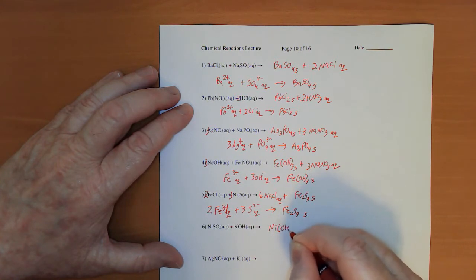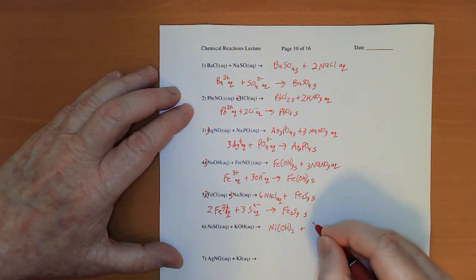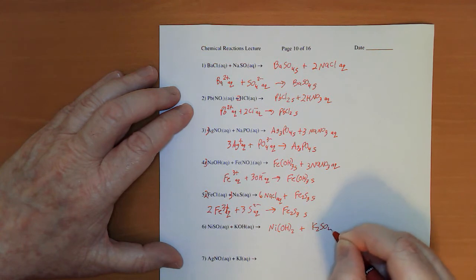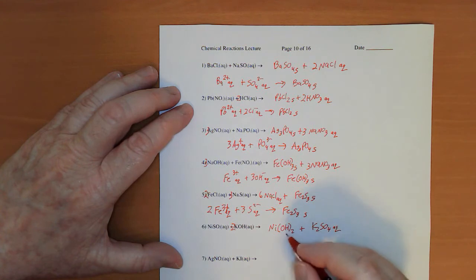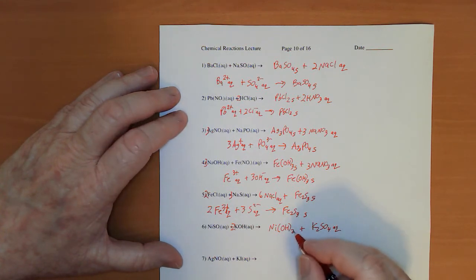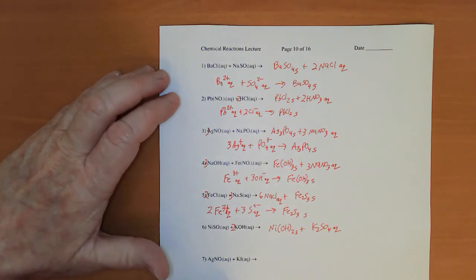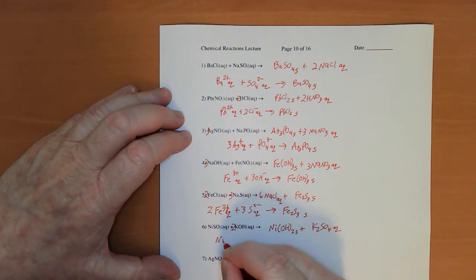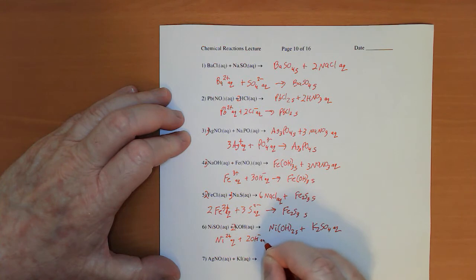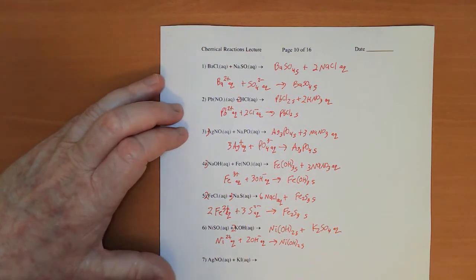Ni(OH)2 and K2SO4. Throwing the two there. Group one, so that's aqueous. Again, hydroxides with the transition metal, that's going to be a solid. Balanced, yep, good. Ni2+ aqueous plus 2OH- aqueous to give me Ni(OH)2 solid.